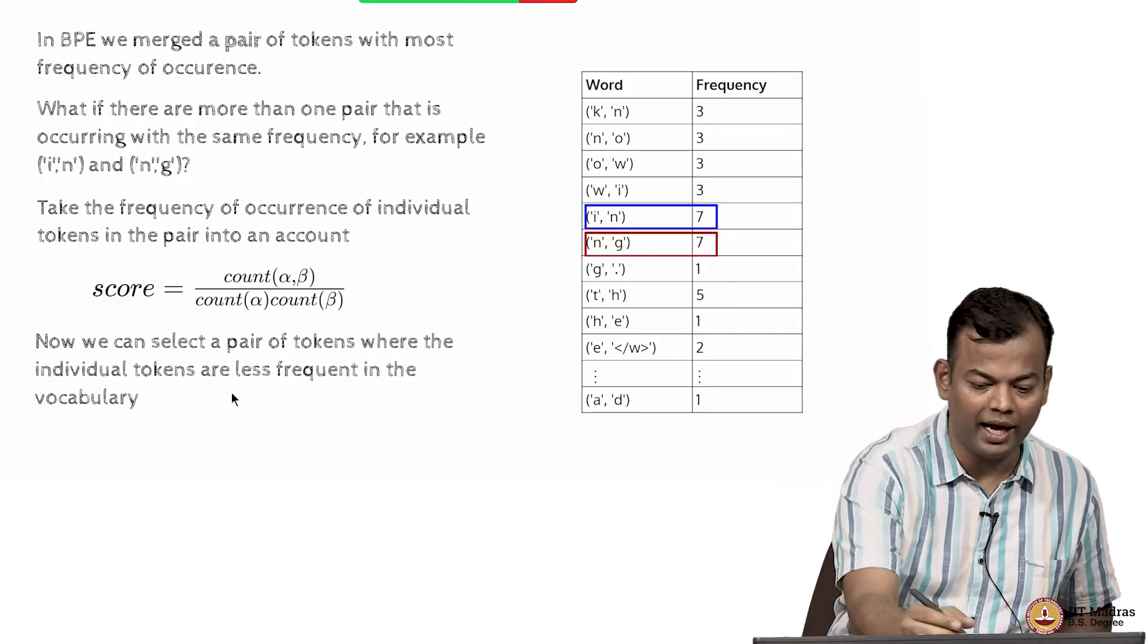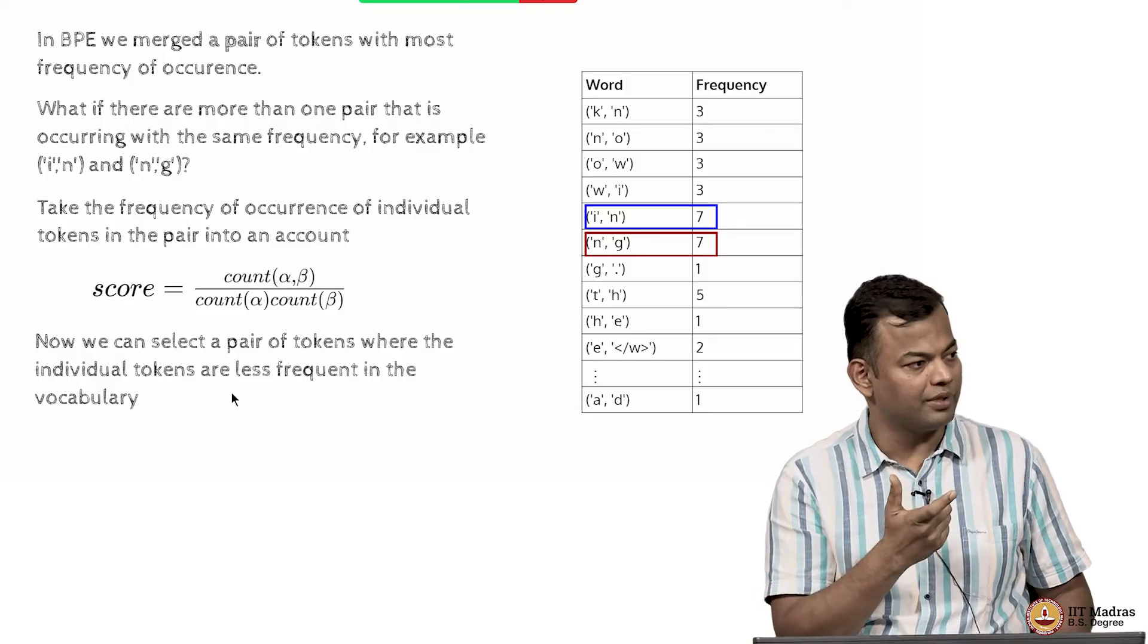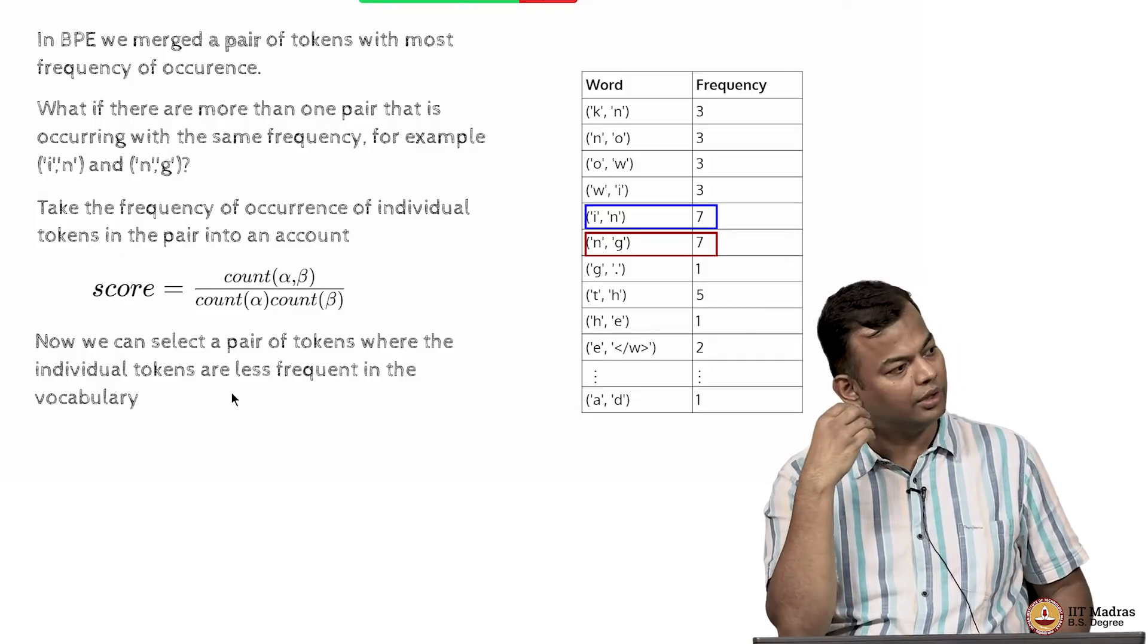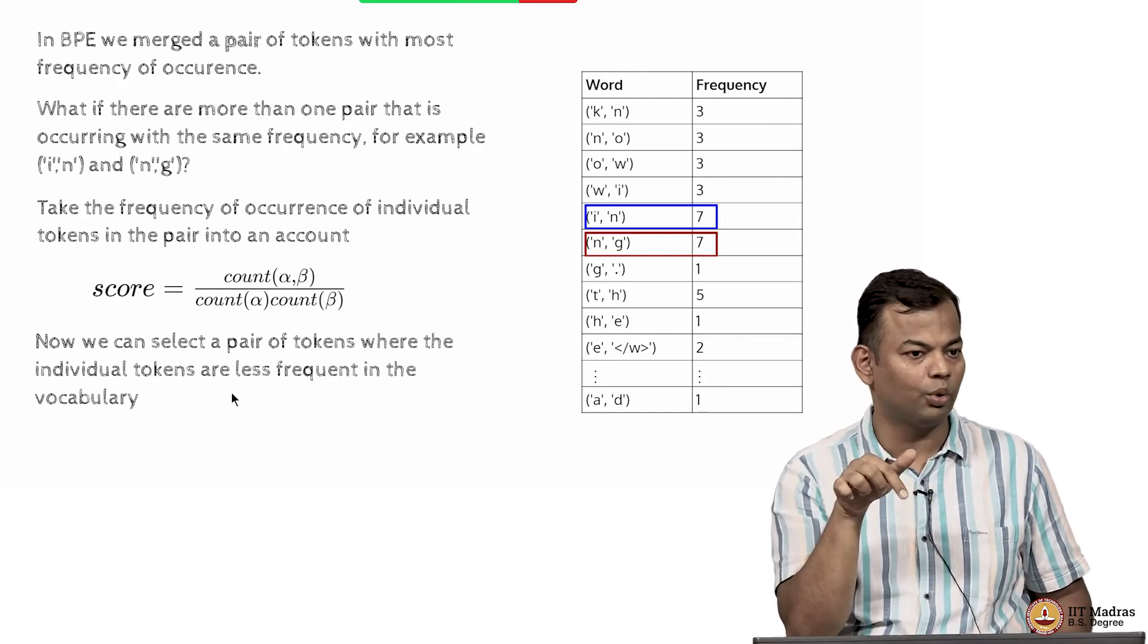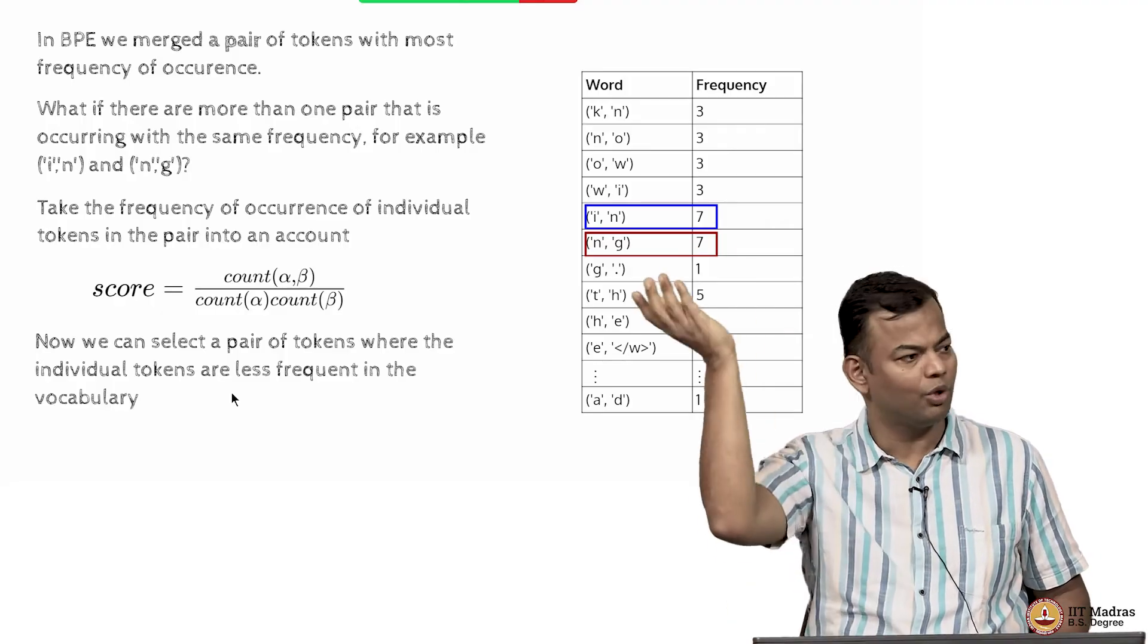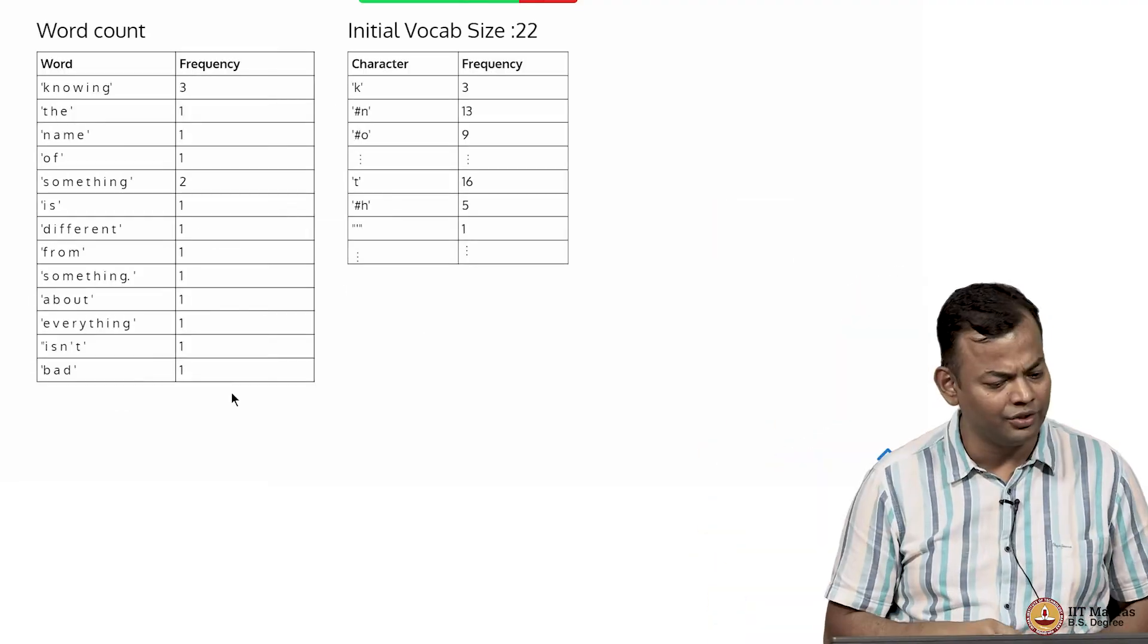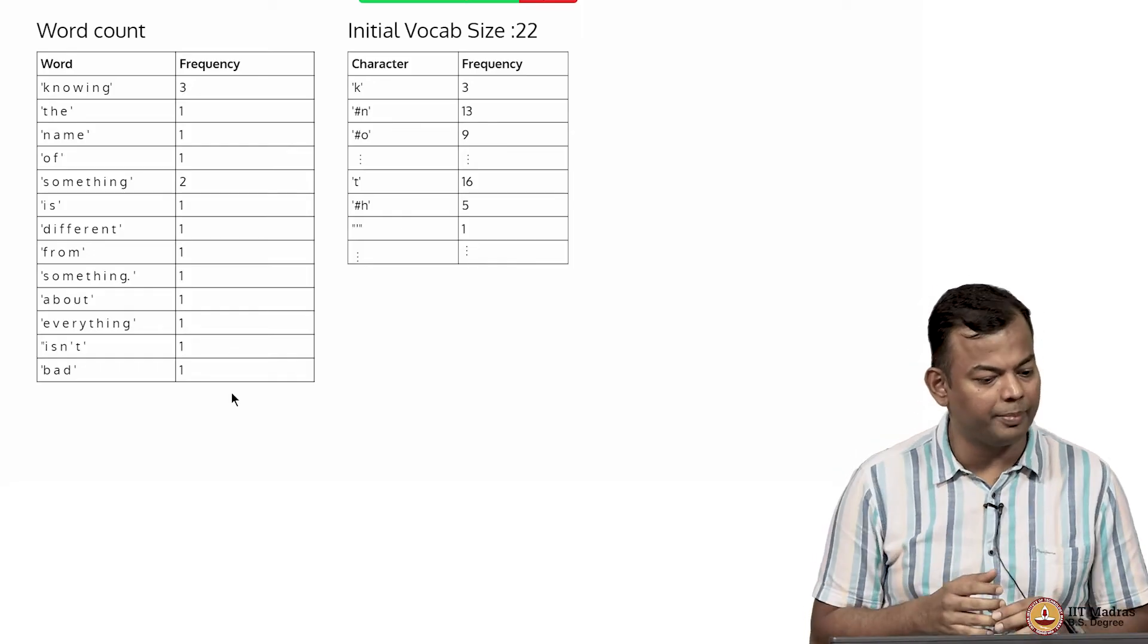As opposed to just looking at the numerator, now you are also looking at relatively what happens. Is this numerator that token actually causing the two denominators to appear or is it that the two sub tokens appear many times? That is the improvement or difference of word piece from BPE.